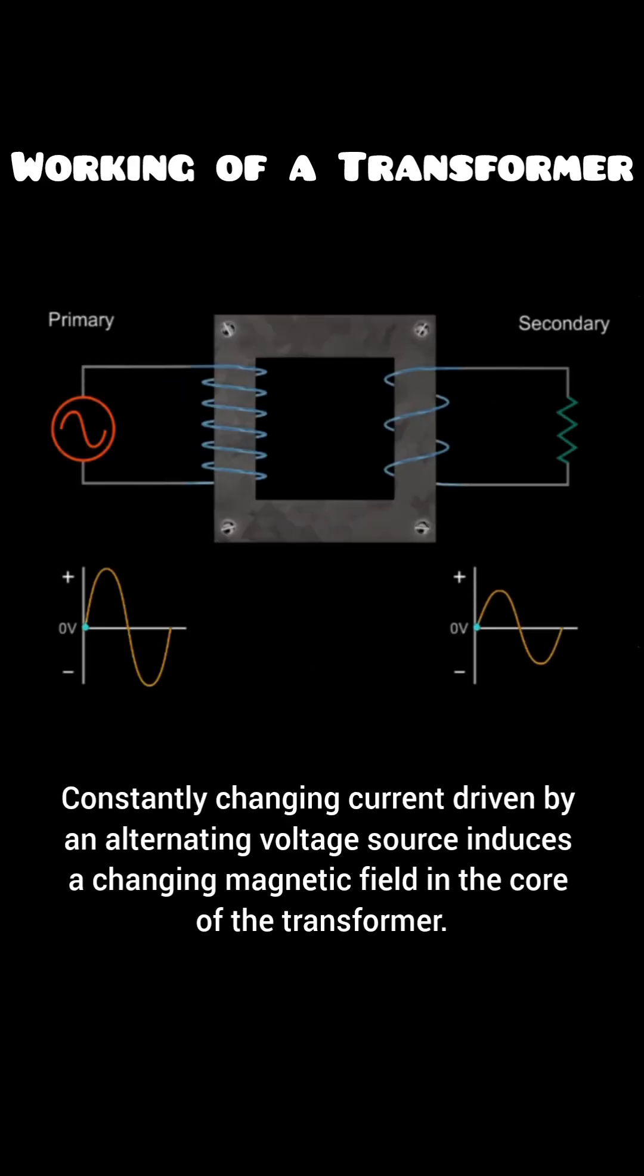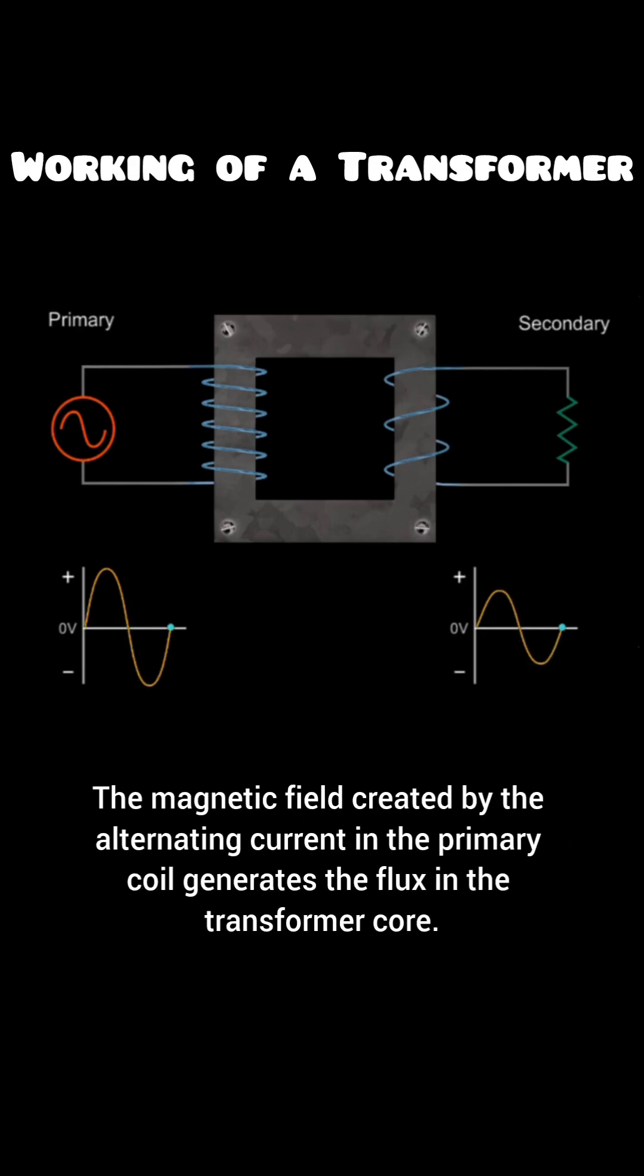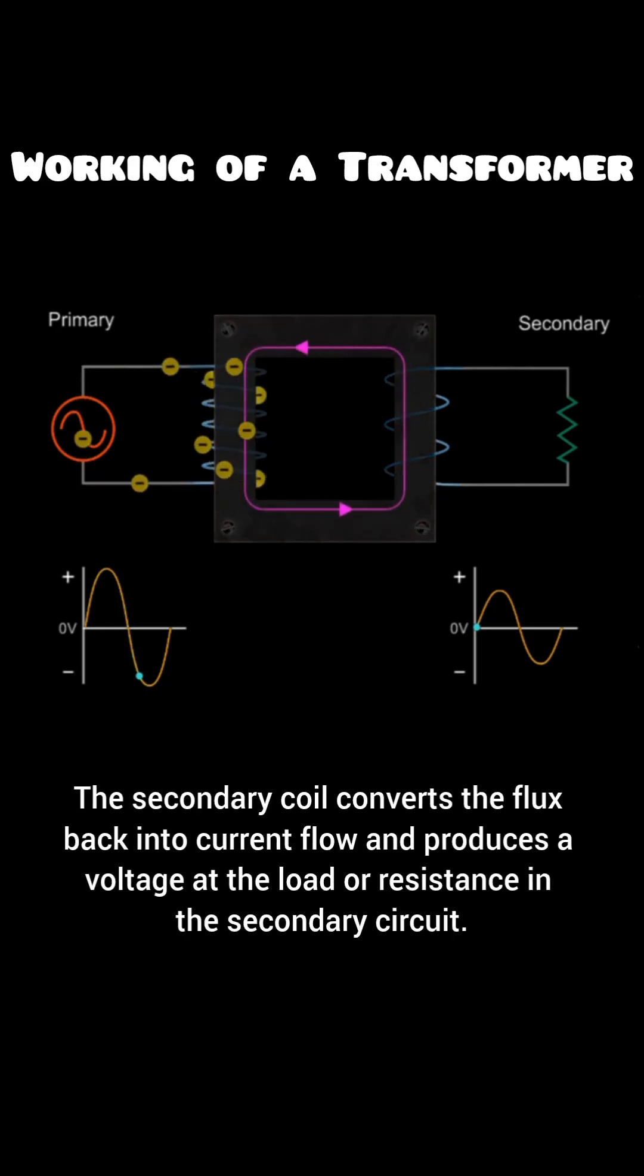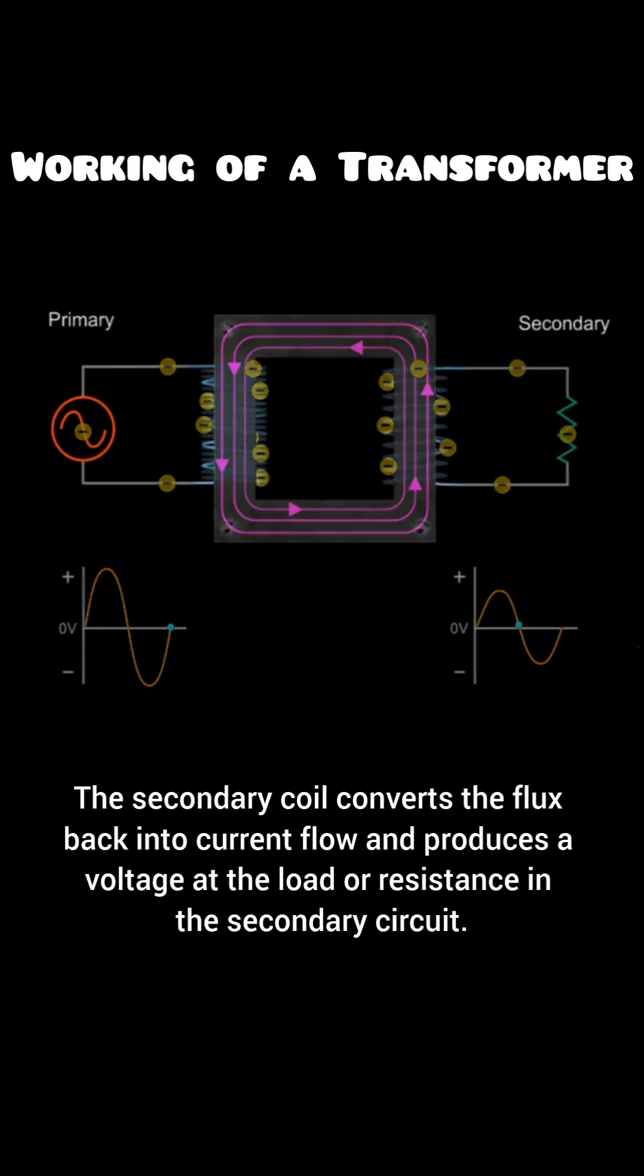Constantly changing current driven by an alternating voltage source induces a changing magnetic field in the core of the transformer. The magnetic field created by the alternating current in the primary coil generates the flux in the transformer core. The secondary coil converts the flux back into current flow and produces a voltage at the load or resistance in the secondary circuit.